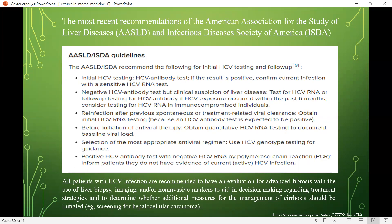The most recent recommendations of the American Association for the Study of Liver Disease and Infectious Disease Society of America: for initial HCV testing, perform HCV antibody test; if positive, confirm current infection with a sensitive HCV RNA test. If the HCV antibody test is negative but there is clinical suspicion, test for HCV RNA or follow-up HCV antibody testing if HCV exposure occurred within the past 6 months.